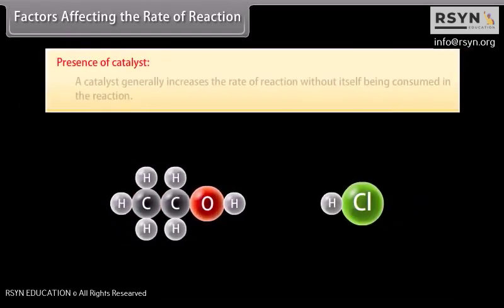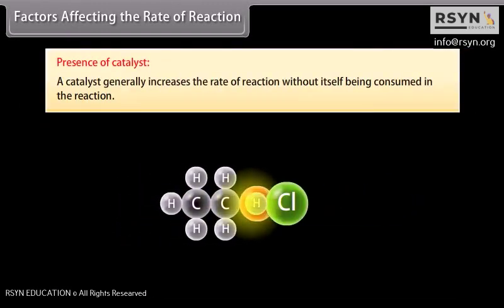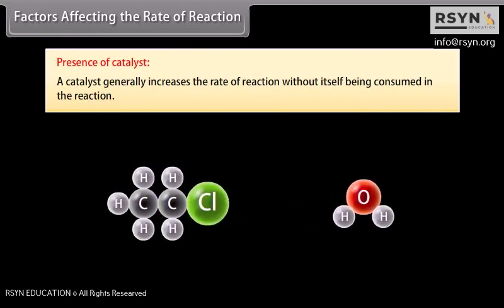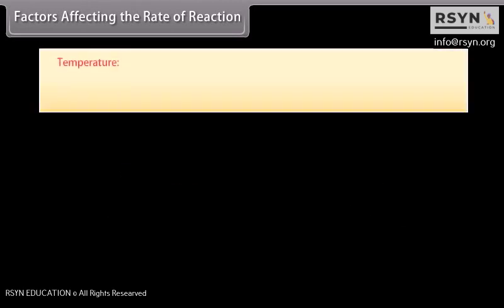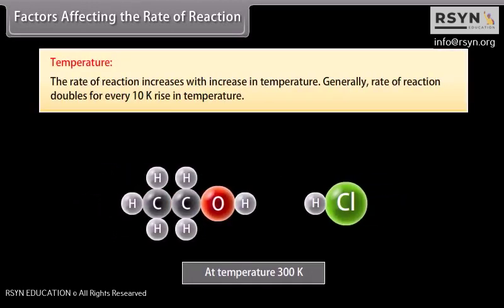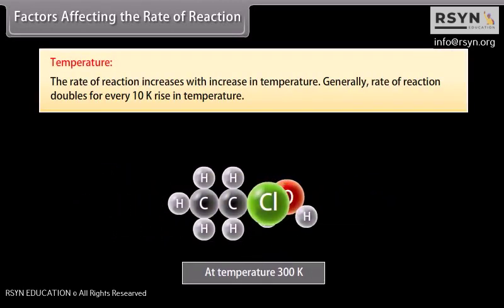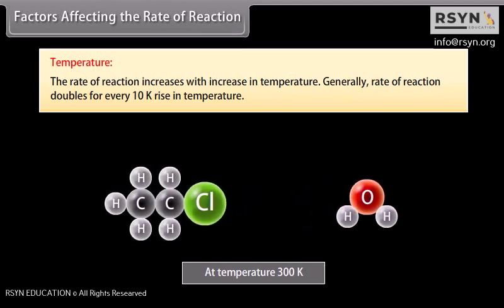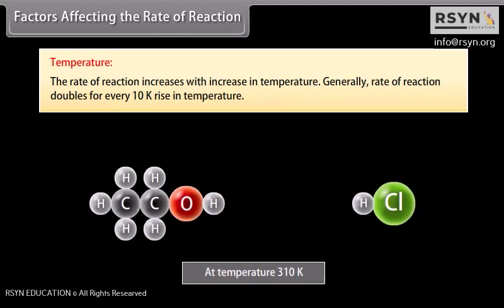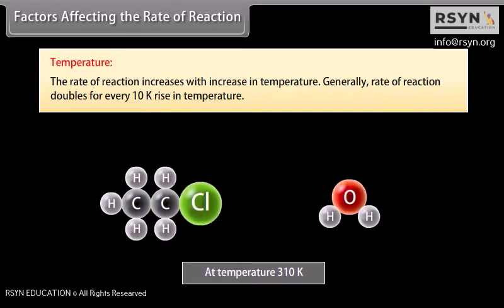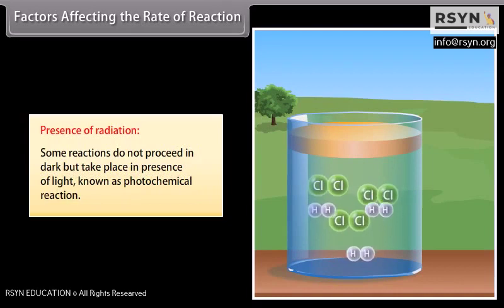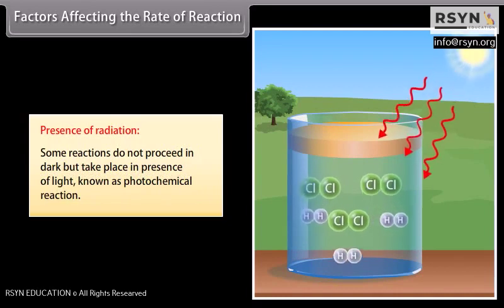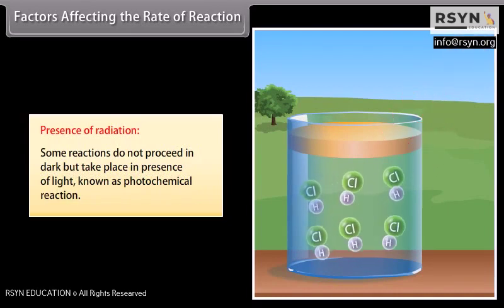Presence of a catalyst: a catalyst generally increases the rate of a reaction without itself being consumed. Temperature: the rate of a reaction increases with an increase in temperature; generally the rate doubles for every 10 Kelvin rise in temperature. Presence of radiation: some reactions do not proceed in dark but take place in the presence of light, known as photochemical reactions.